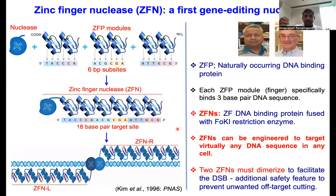Zinc finger is a DNA binding protein, but we also need a nuclease component. Professor Srinivasan Chandrasekaran from Johns Hopkins University took the zinc finger DNA binding protein and fused it with the FOK1 nuclease enzyme — a type II restriction enzyme. He first showed that after separating the DNA binding domain from the nuclease part of FOK1, the nuclease domain was still active. He then fused the FOK1 nuclease domain with the zinc finger DNA binding protein, creating zinc finger nucleases — nothing but the zinc finger DNA binding protein fused with the FOK1 restriction enzyme.